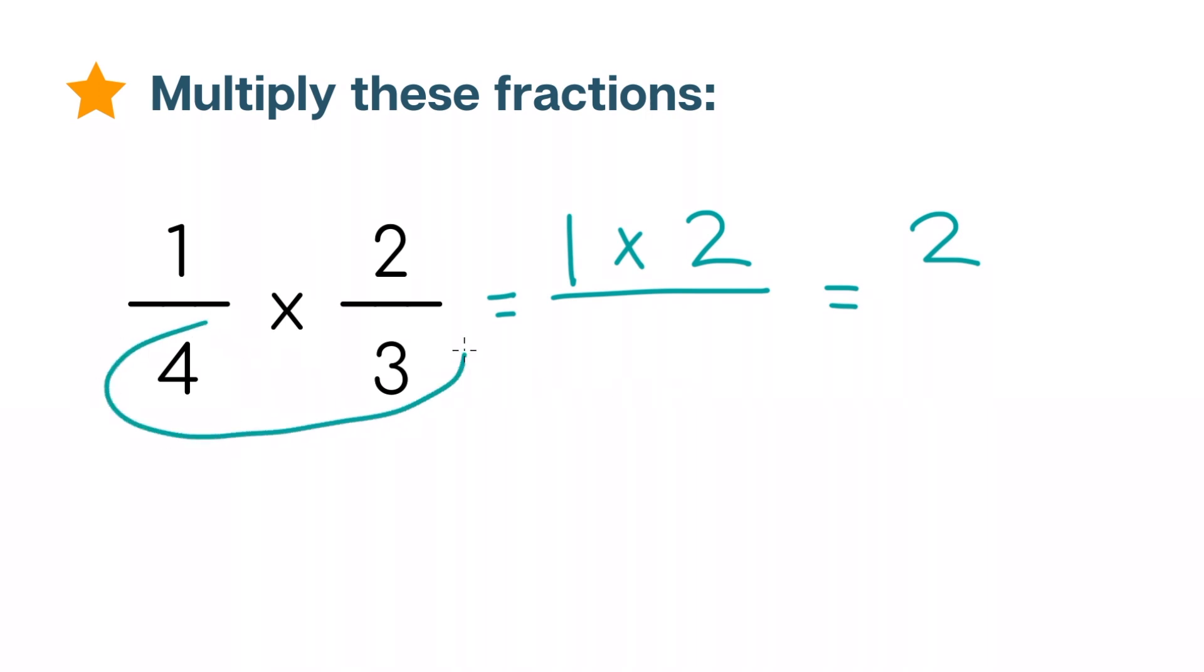Then let's multiply the numbers in the denominator. 4 times 3, which equals 12. And this is the denominator of our answer.